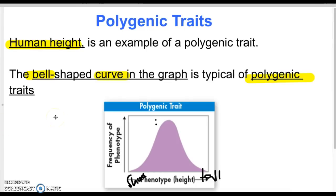The pocket mice fur from the pocket mice video is also polygenic — many genes contribute to it, which is why you see different shades of brown and darker blacks. We will review these notes in class when you return, and be ready to talk about frequency of alleles in a population because we will be doing a lab demonstration on this.